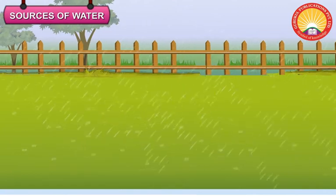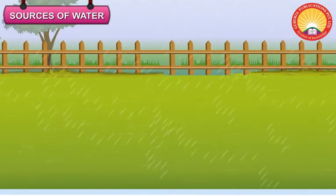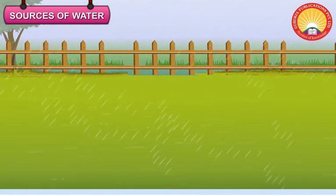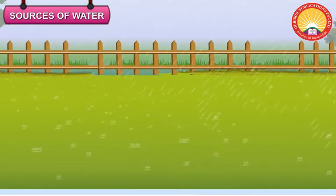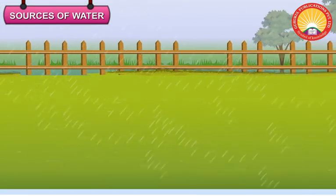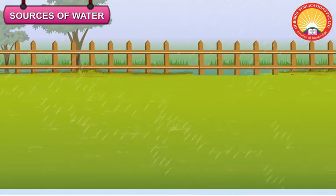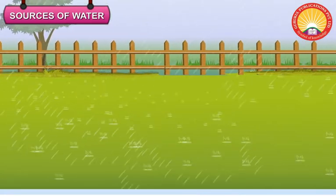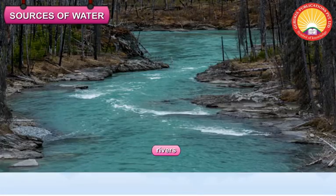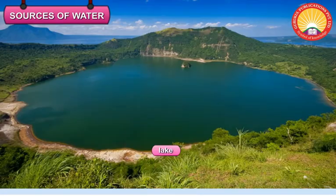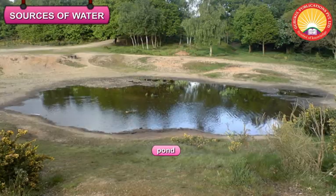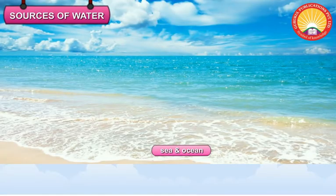Rain: Rain is the main source of fresh water on the earth. When it rains, the rainwater goes into rivers, lakes, ponds, seas, oceans, etc.